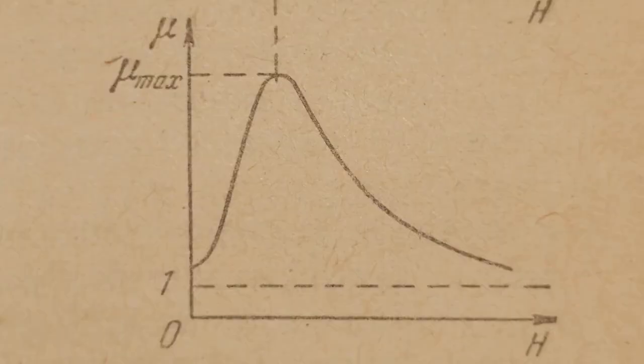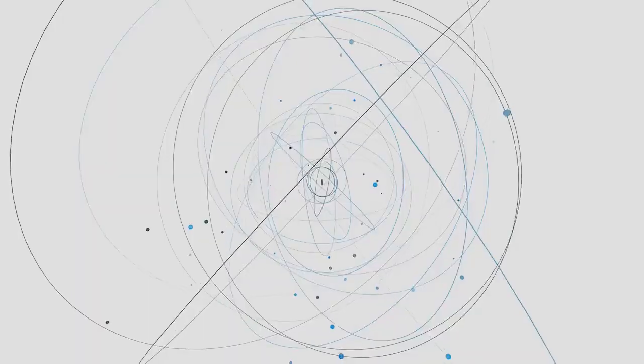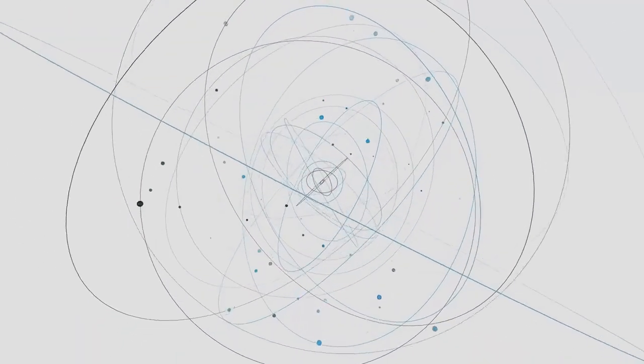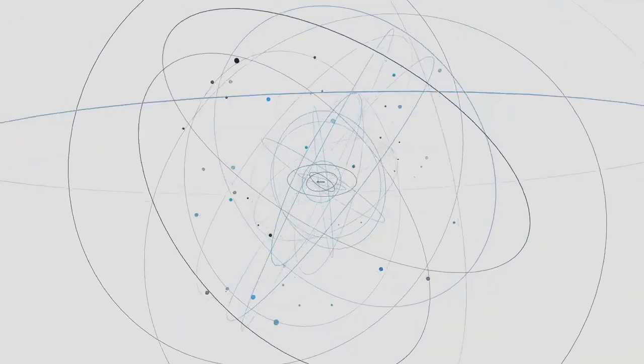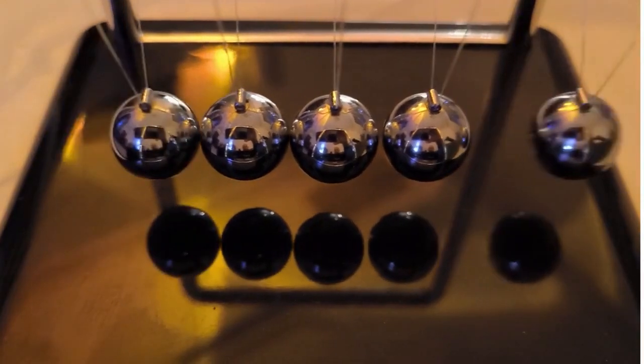Why did physicists have to invent quantum mechanics? For centuries, classical physics explained the motion of planets, the mechanics of machines, and even the behavior of gases.